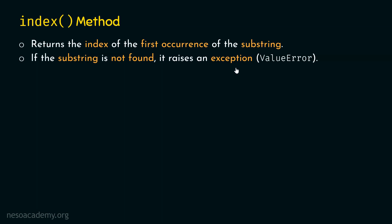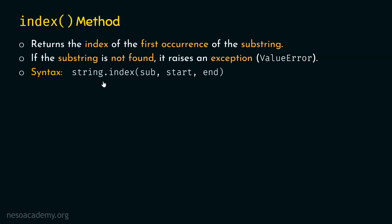Recall that the find method returns -1 if the substring passed to it is not found within the string. Now let's see the syntax of the index method. We first need to provide the string, then the dot operator, then the index method itself. Within parentheses, we can provide three arguments. The first argument is mandatory — it represents the substring itself. The second argument is the start index from where the search should begin, and end represents the ending index where the search should end. These two arguments, just like the find method, are optional, but sub, which represents the substring, is mandatory.